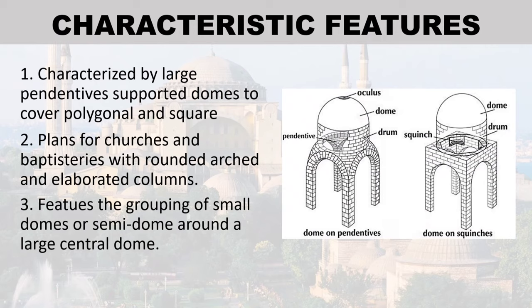Characteristic features: first, characterized by large pendentive-supported domes to cover polygonal and square plans for churches and baptisteries, with rounded arches and elaborated columns. Third feature: the grouping of small domes or semi-domes around a large central dome.